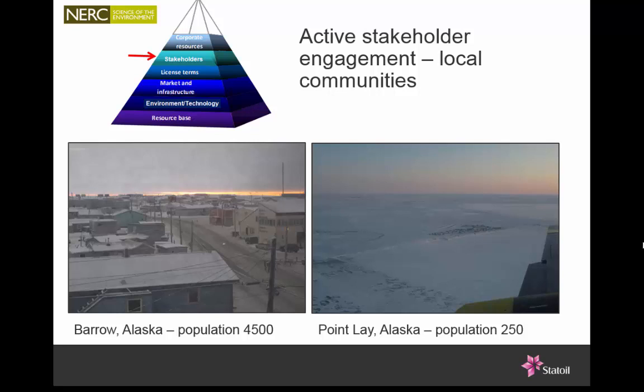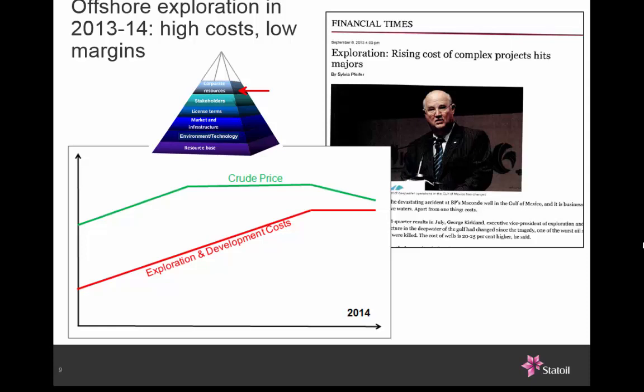Before I get on to the geology, let's talk about cost — and cost is a major issue in the Arctic. This graph shows cost on the vertical axis and time on the horizontal axis. The green line is the crude price — we've enjoyed a nice period of high oil price, it levelled off for a while, and now it's starting to drop quite alarmingly. Meanwhile, exploration and development costs have been rising and rising, so margins right now are really pinched. George Kirkland, the head of E&P at Chevron, has been telling everybody that it's very hard to make a buck out of complex offshore projects — and when you get to the Arctic, it gets even more difficult.